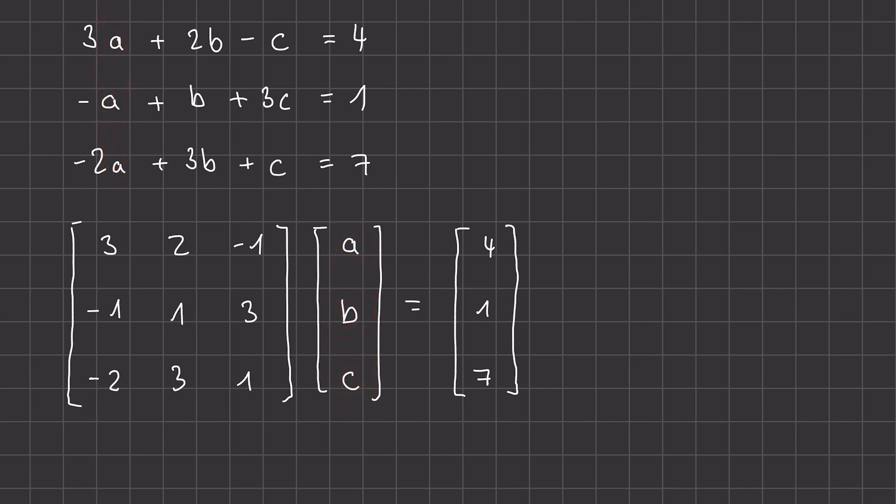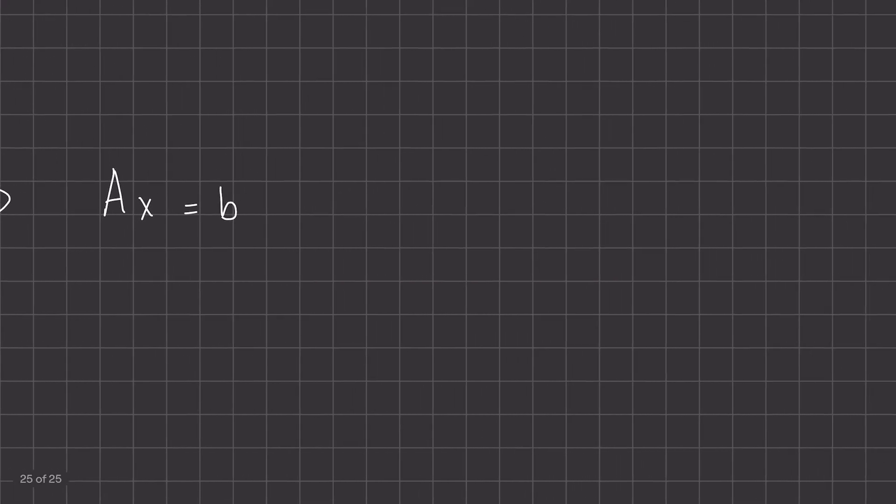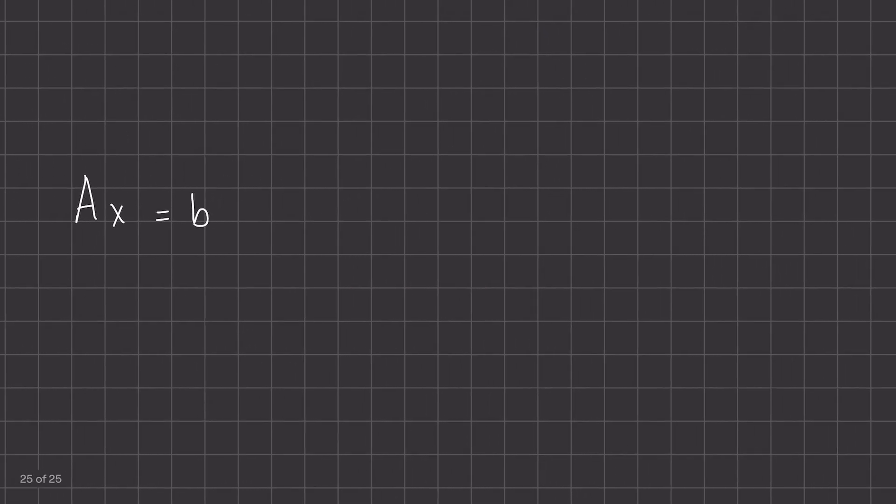And we also separate our information as now we have this vector here for our variables and this matrix for all the coefficients in these equations. And a last vector to show what our expected result is. You can write this in this compact format A, X equals B. Now this then encodes the system of equations we just saw and allows us to solve the system of equations.